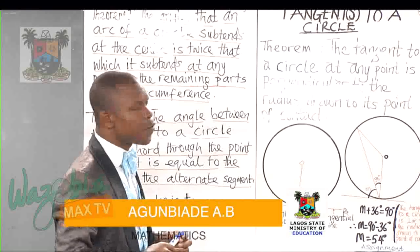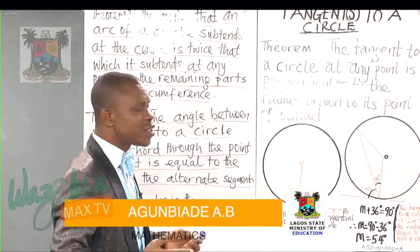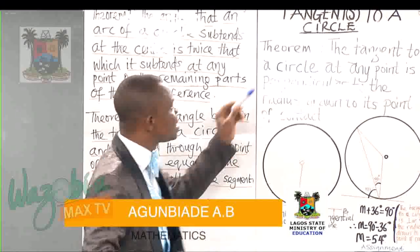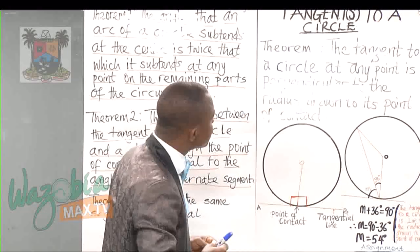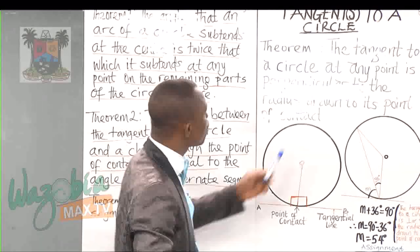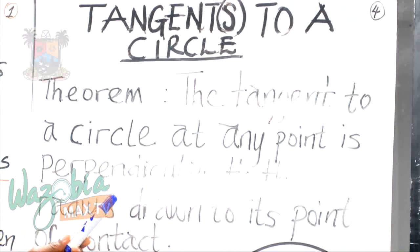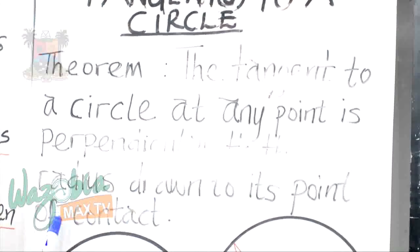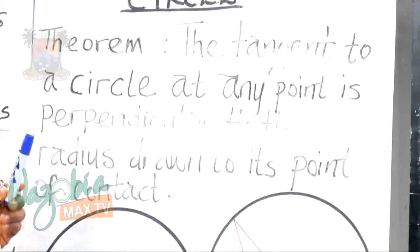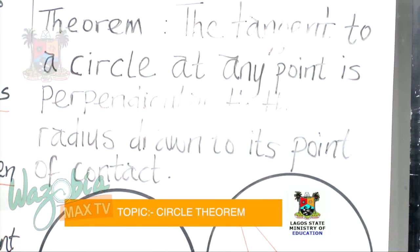Another aspect of circle theorem I'll be concentrating on, which students also dread, is tangents to a circle. Under tangent to a circle, the theorem states: the tangent to a circle at any point is perpendicular to the radius drawn to its point of contact.